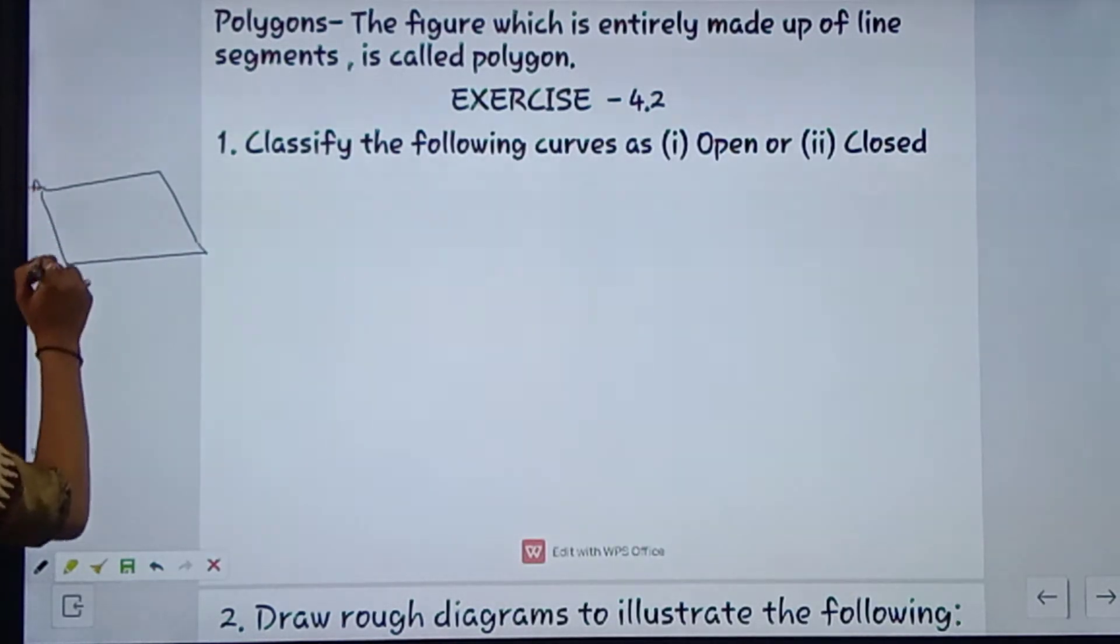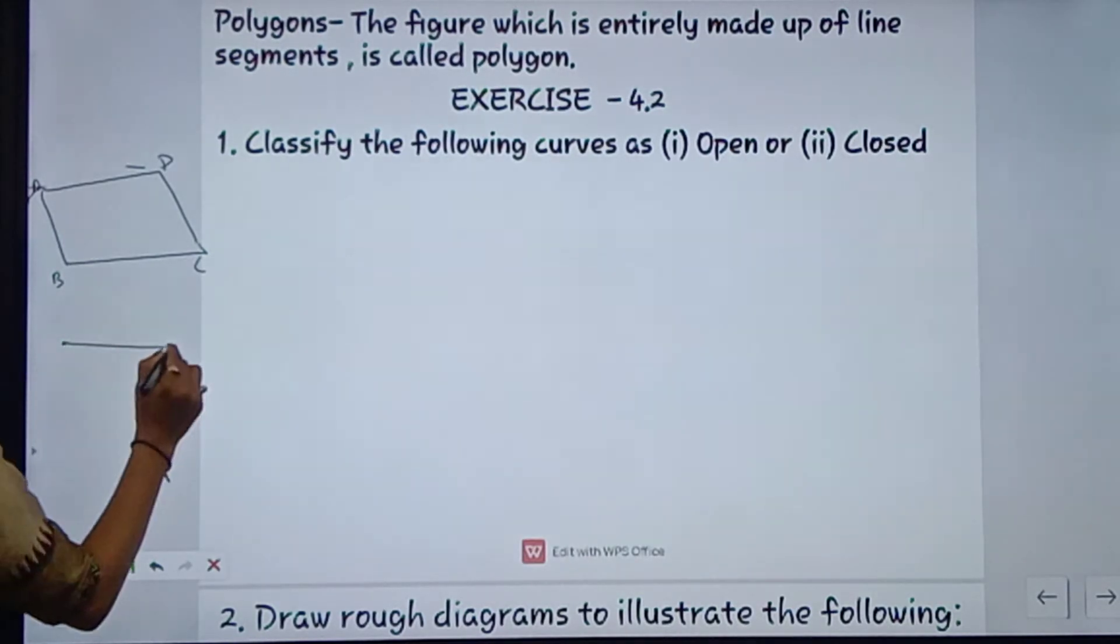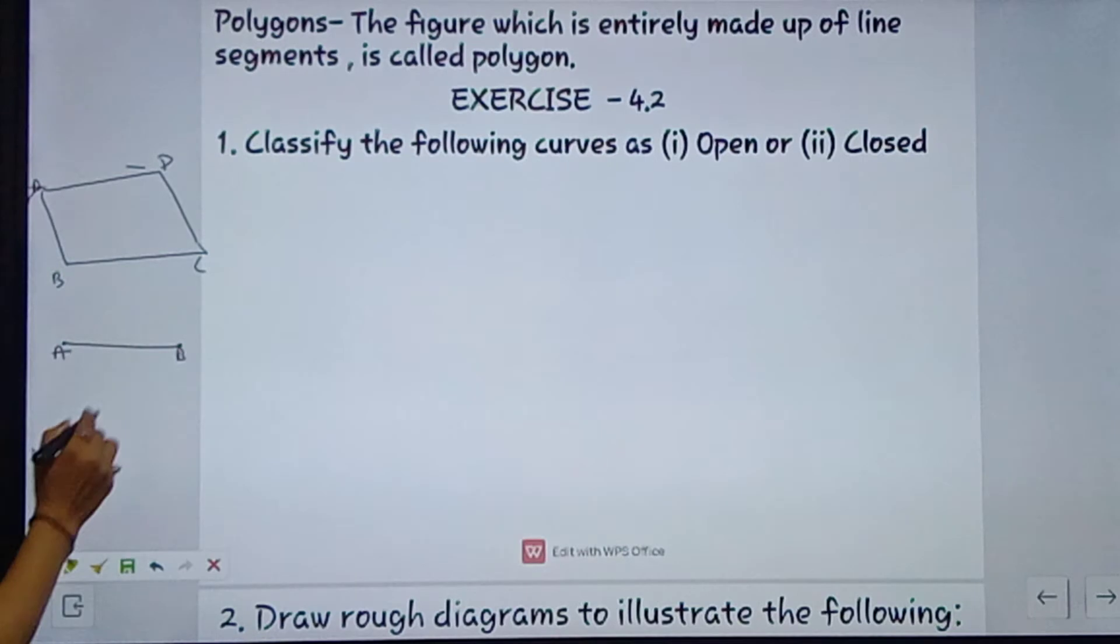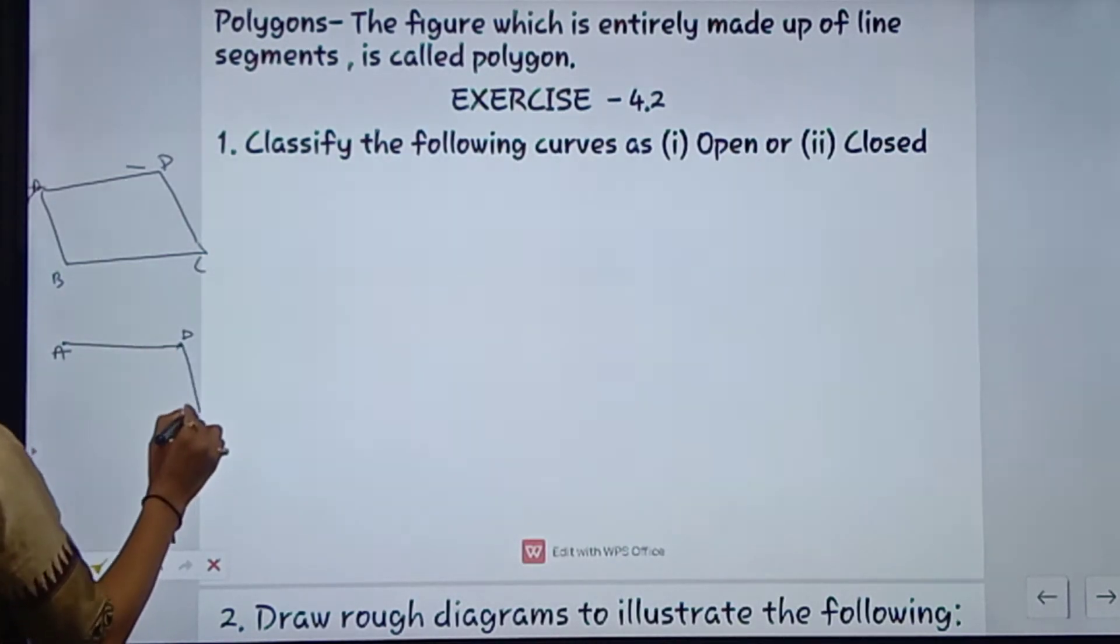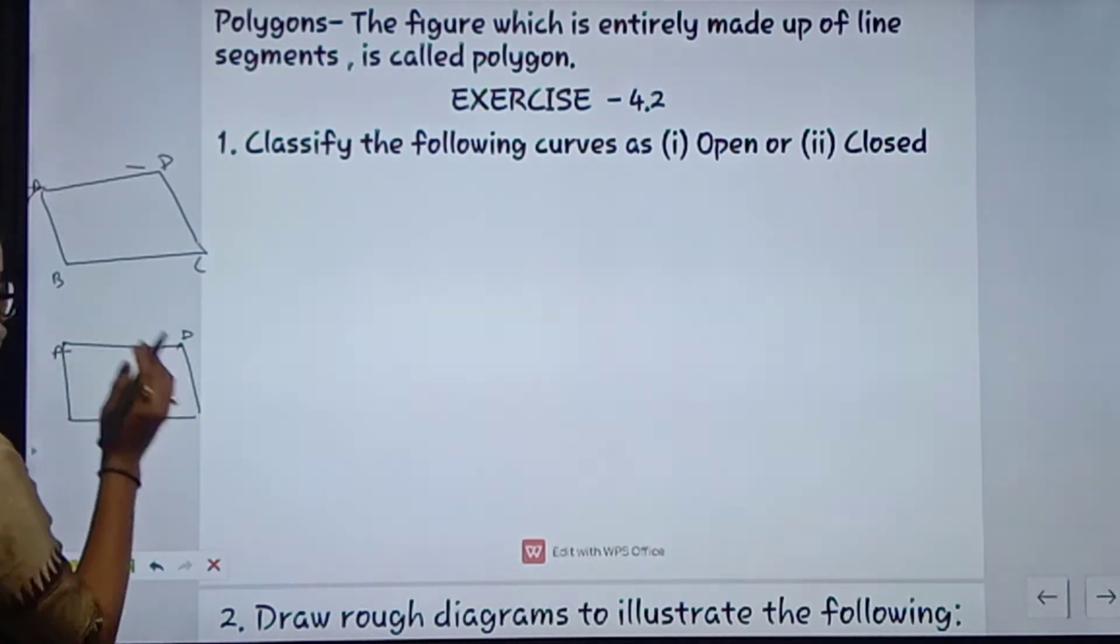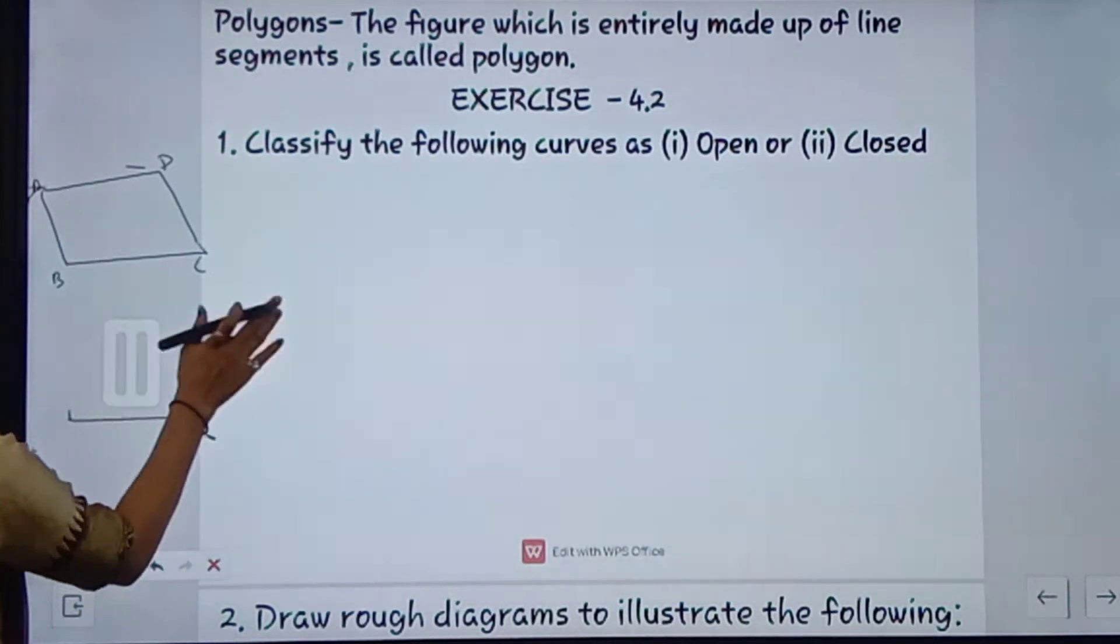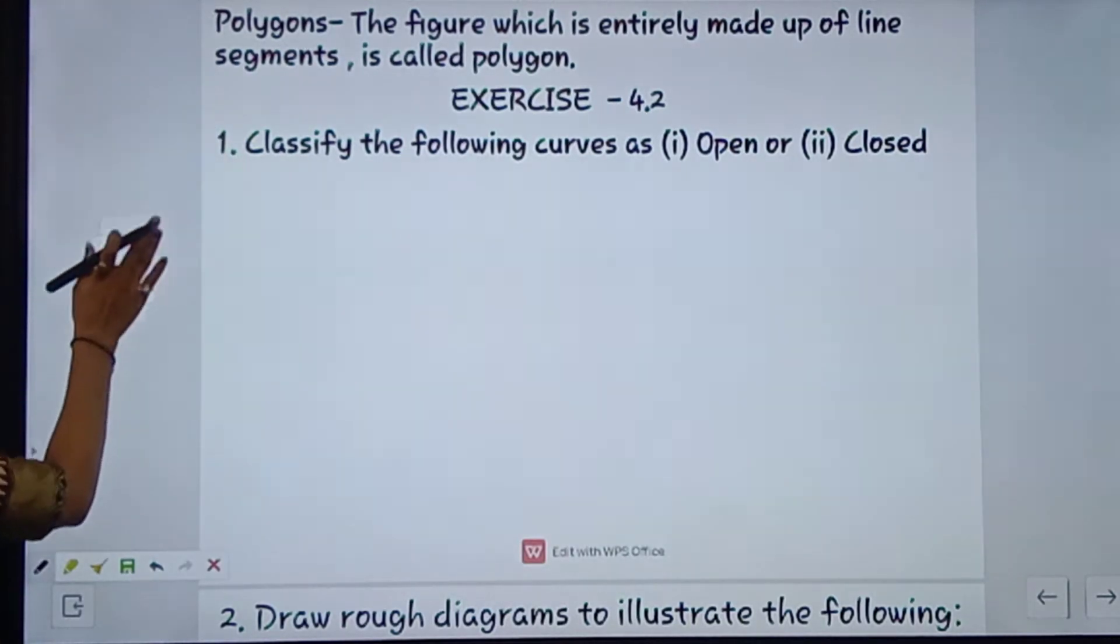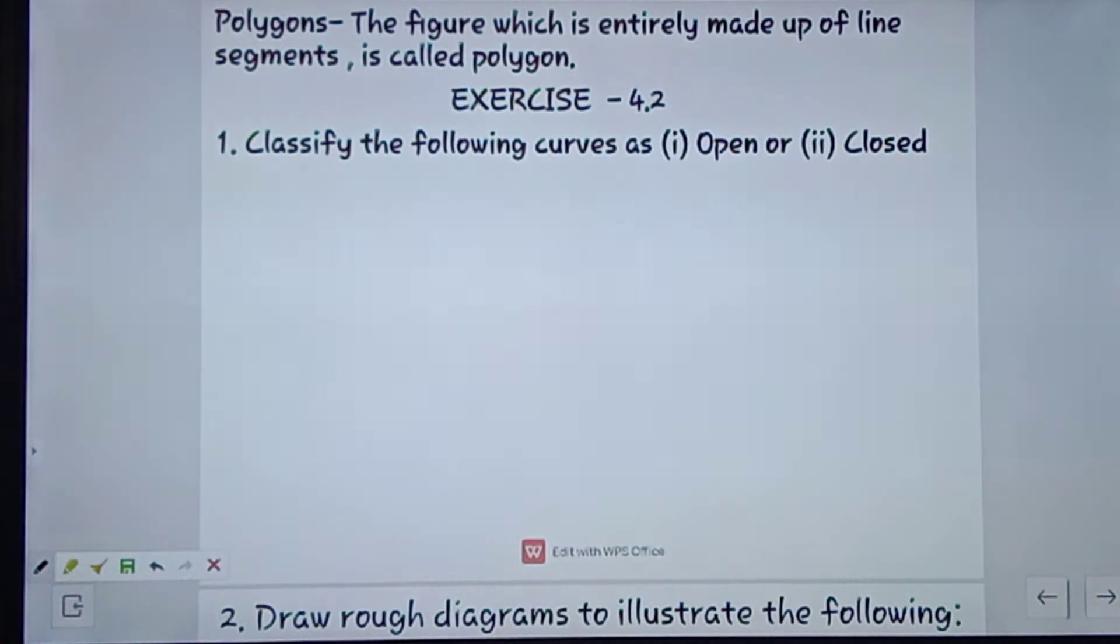Like A, B, C and D - simple closed curve hoga or line segment hoga. A or B means starting point or ending point fixed hoga - A and D, yeh point hai, fixed hai. Jitnye bhi usmein points hoga, who line segment hoga. So polygons ki condition hoga - the figure which is entirely made up of line segment is called polygons.